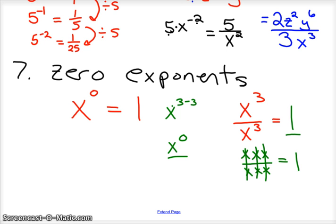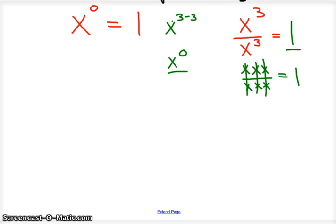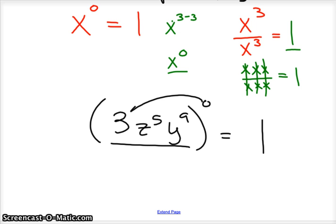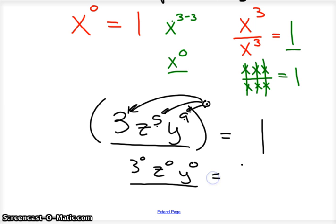It doesn't matter how crazy the expression is. If you had 3z to the fifth, y to the ninth, all to the zero power, that equals just 1. The zero power goes to everything inside because of the product power rule: 3 to the 0, z to the 0, y to the 0 — since 5 times 0 is 0, 9 times 0 is 0, 1 times 0 is 0 — and all of those are 1.